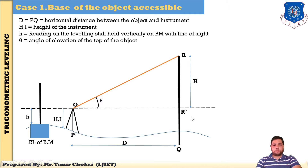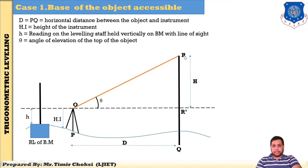Now, in triangle O, R, R-dash — this is the line of sight and our object is above the line of sight, which means this angle is called the angle of elevation. When the object is below the line of sight, it is called an angle of depression. But here, consider that the observed point is above the line of sight, so it is called the angle of elevation.